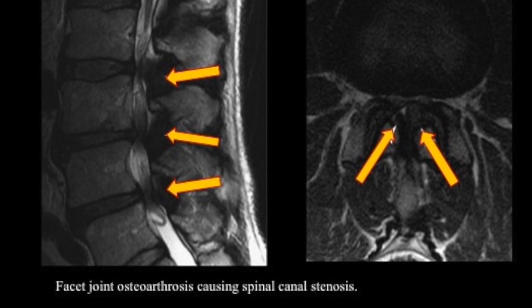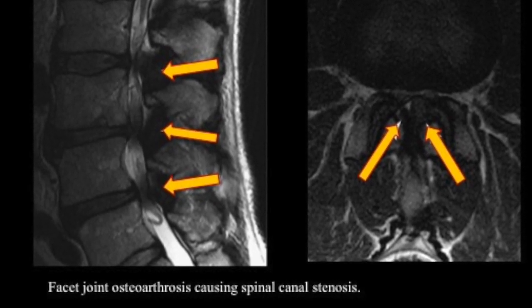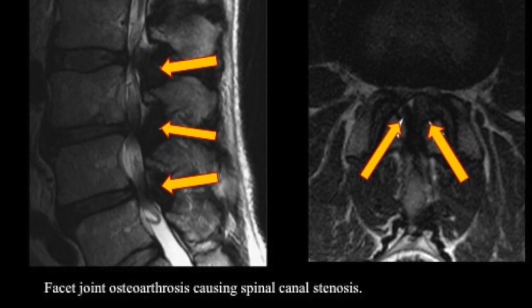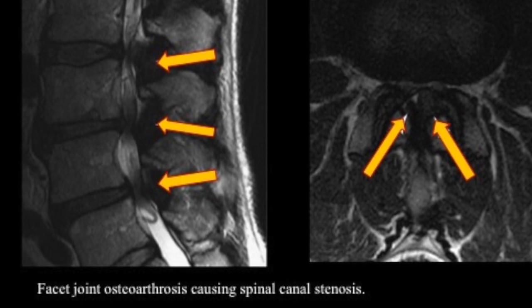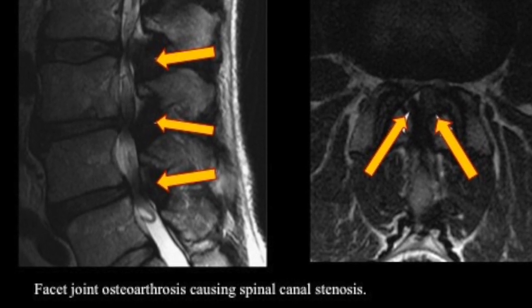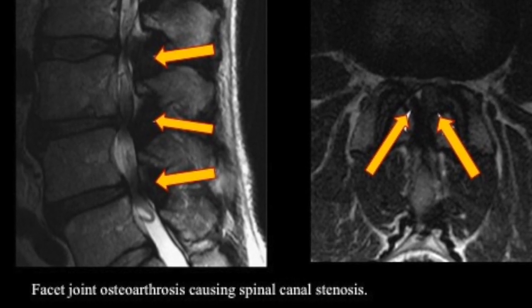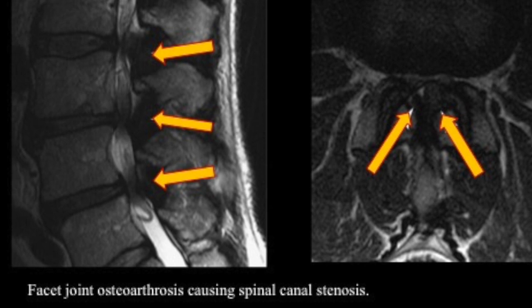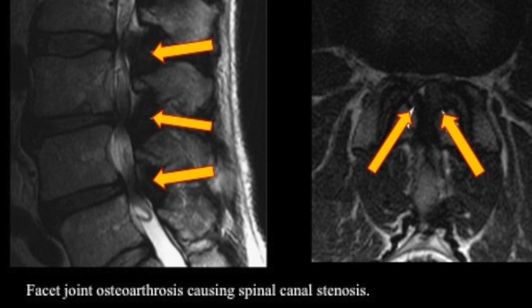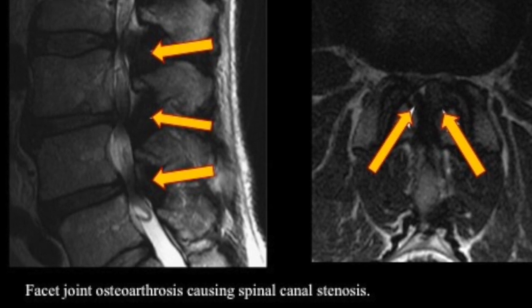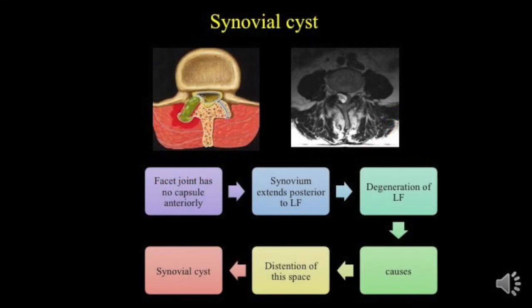An example demonstrates facet joint osteoarthrosis causing spinal canal stenosis with ligamentum flavum thickening, described as secondary spinal canal stenosis due to osteoarthrosis at the facet joints and ligamentum flavum. We then come to a very commonly seen mass effect — the synovial cyst.